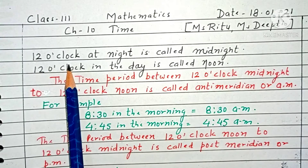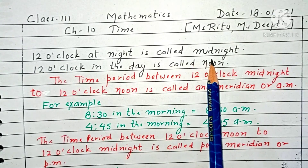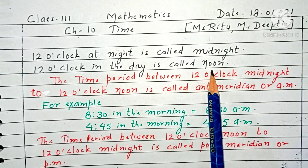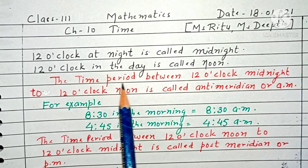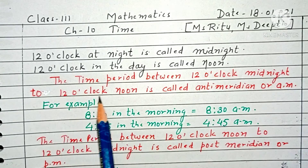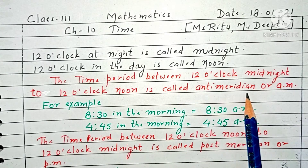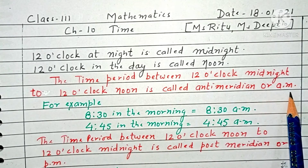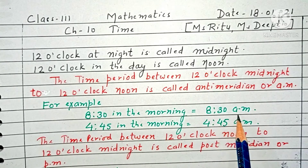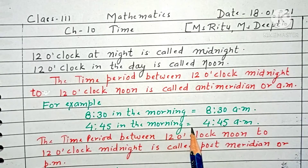12 o'clock at night is called midnight. 12 o'clock in the day is called noon. The time period between 12 o'clock midnight to 12 o'clock noon is called anti-meridian or AM. For example, 8:30 in the morning is 8:30 AM, and 4:45 in the morning is 4:45 AM.